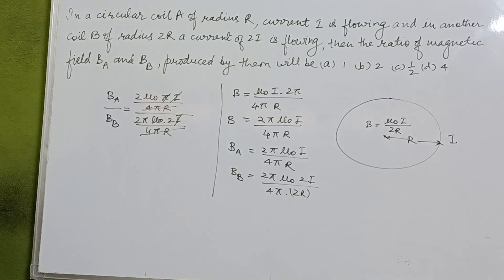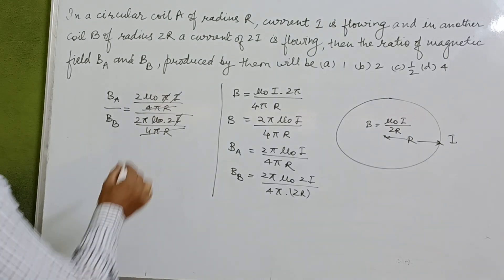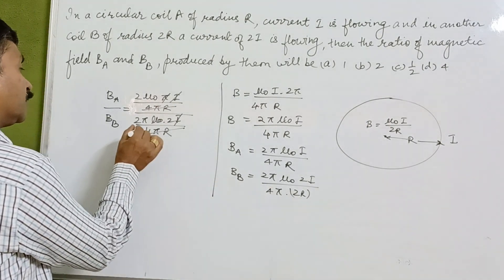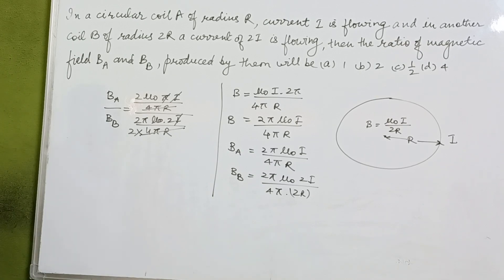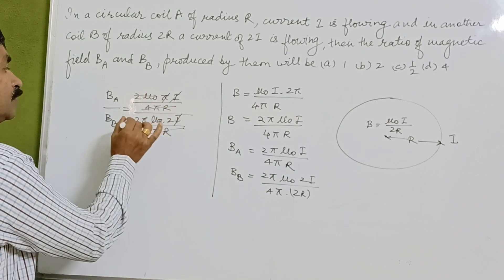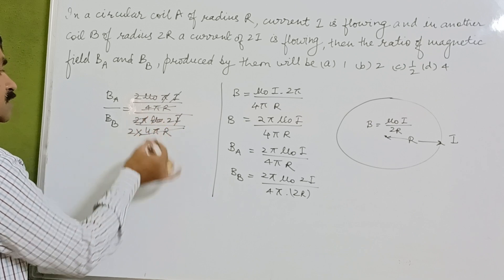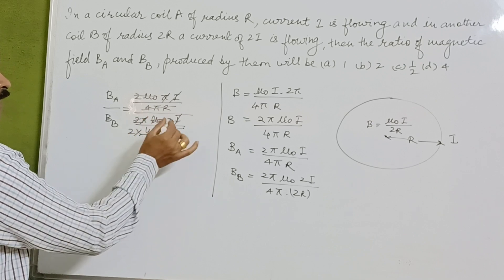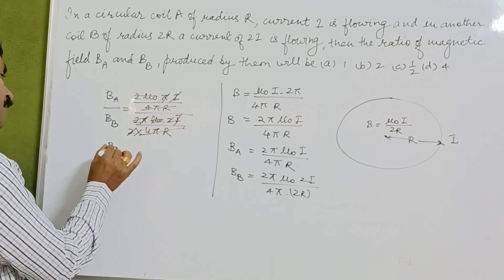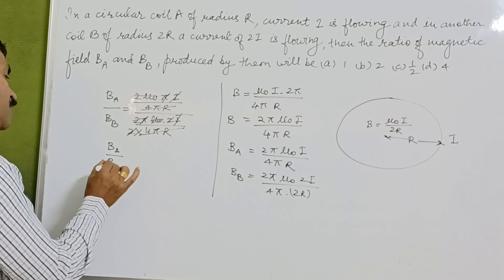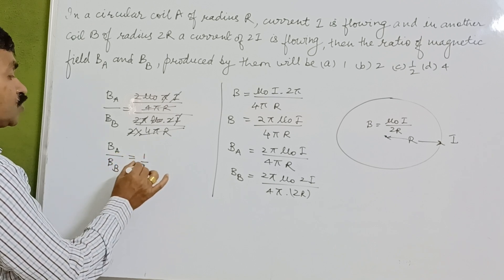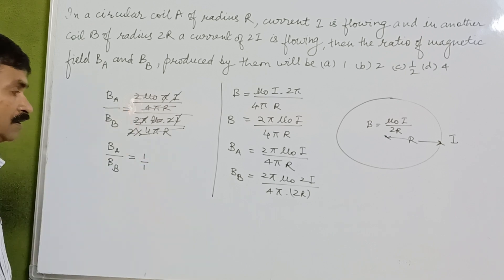After cancellation — 2r in the denominator of Bb brings in an extra factor of 2, and 2i in the numerator of Bb also contributes a factor of 2 — these cancel out, and finally Ba / Bb = 1:1.